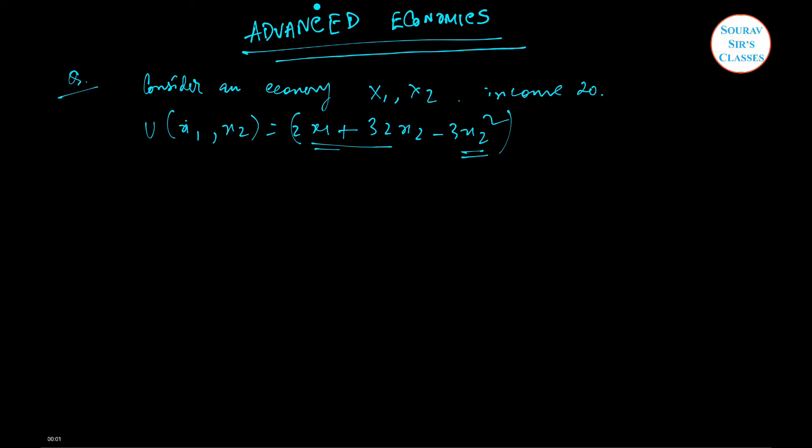Hello, this video is about some advanced topics in economics and would be useful for competitive examinations. This problem is based on mathematical economics where we have an economy where two goods are sold, x1 and x2, and a person's income is 20 units.